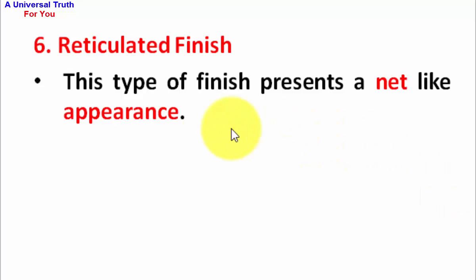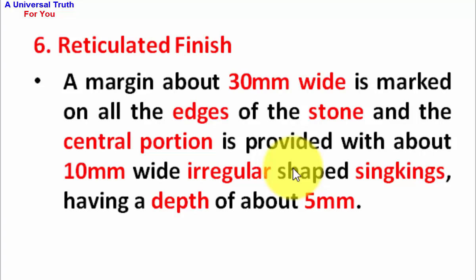Number 6, Reticulated finish. This type of finish presents a net-like appearance. A margin of about 30 mm width is marked on all the edges of the stone and the central portion is provided with about 10 mm width irregular shaped sinkings.